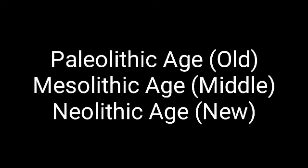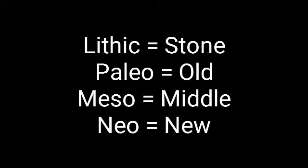The Stone Age is divided into three types: Old Stone Age, Middle Stone Age, and New Stone Age. Their technical names are Paleolithic Age for Old Stone Age, Mesolithic Age for Middle Stone Age, and Neolithic Age for New Stone Age. The word 'lithic' means stone; 'paleo' means old, 'meso' means middle, and 'neo' means new.